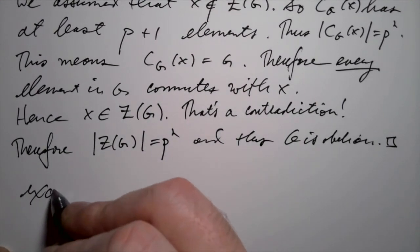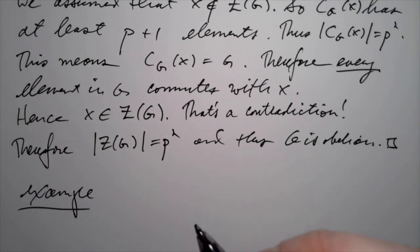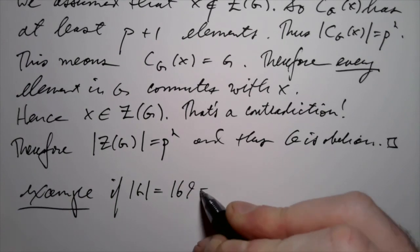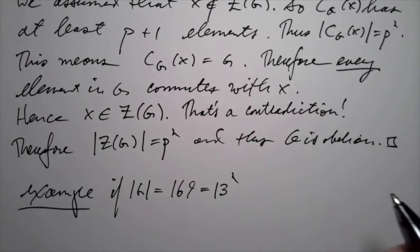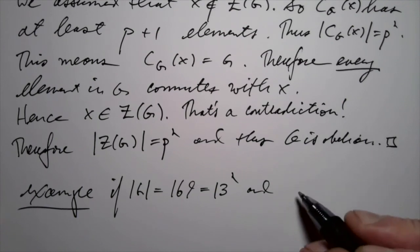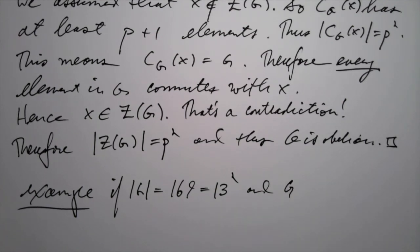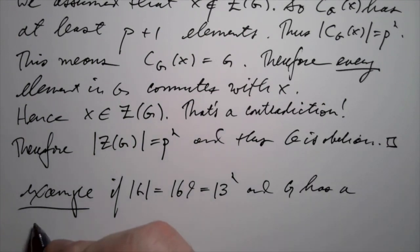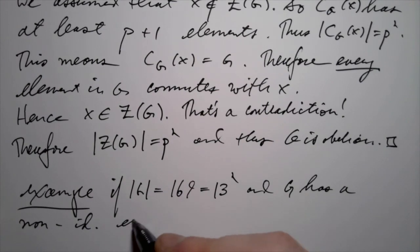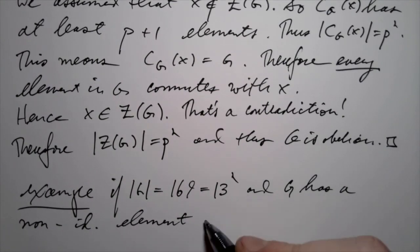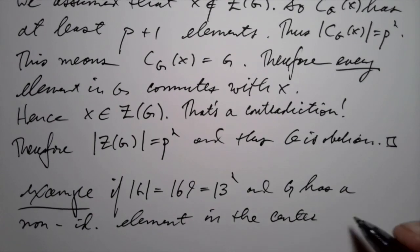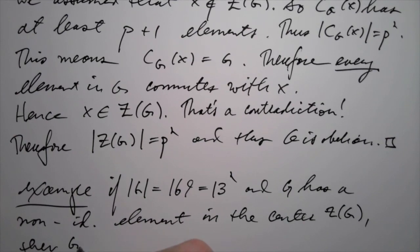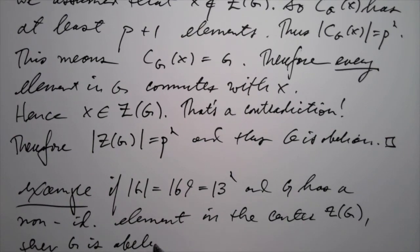As a special case, we get the claim that if G has order 169 — that's 13 squared — and the superfluous assumption (which we'll see later always follows automatically) that G has a non-identity element in the center, then G is abelian. That's a special case of this proposition.